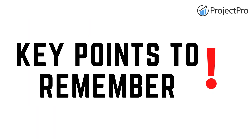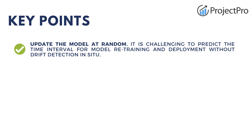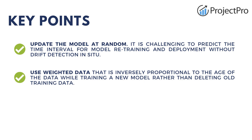Let's discuss some key points to remember when building, retraining, or deploying machine learning models in production. First, always update or retrain data at regular intervals if you don't have a drift detection framework, since it's hard to know the best time to retrain. Also, use weighted data that is inversely proportional to the age of data when training a new model rather than deleting old data, or use incremental learning to retrain so that old training data is not missed out.